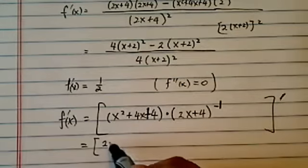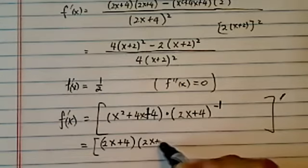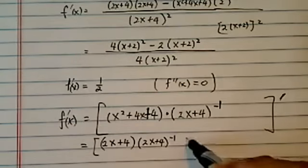Derivative of the first one, which is 2x plus 4. We're going to leave the second one alone, which is (2x plus 4) to the minus 1. Add.